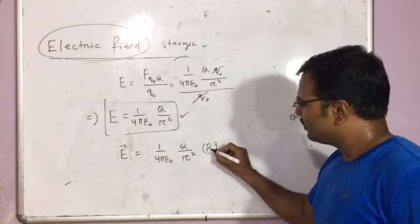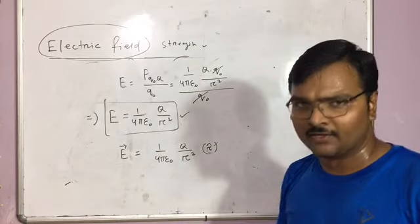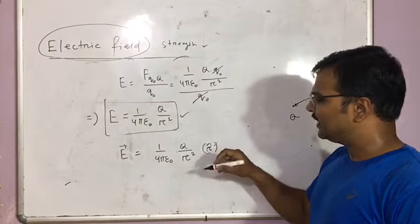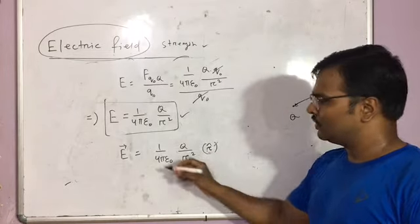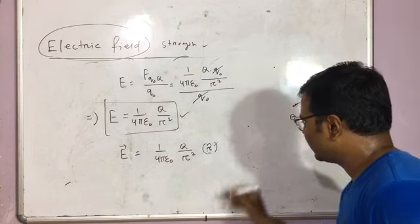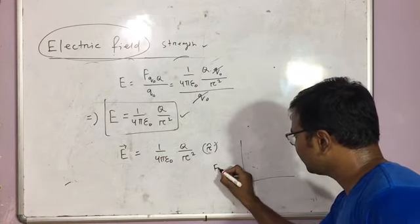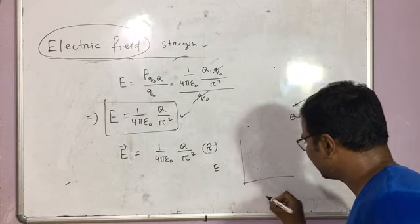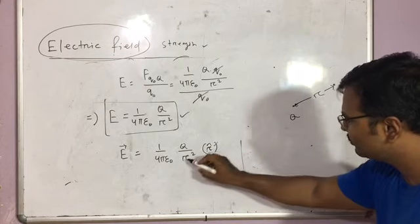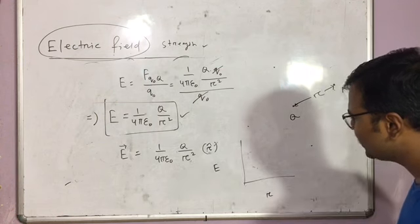The electric field vector is along the direction of the radius — it depends on the radial vector direction. Now, when we take a graph of electric field with R because of a point charge, you see it is inversely proportional to R square.